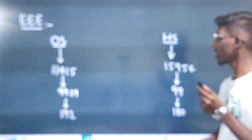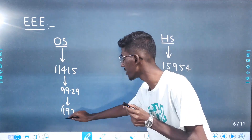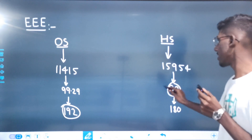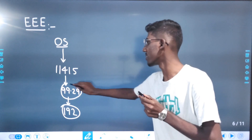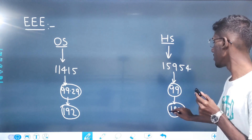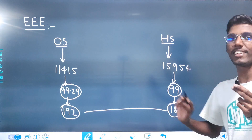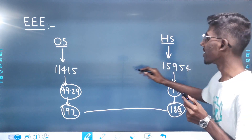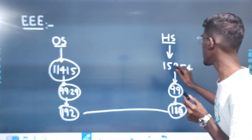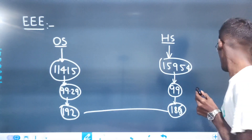Next is EEE — 192 marks at 99.29 percentile. There is a high mark here, around 185. The range touches 99.99 percentile. For homestate it is 1k rank, and for other state it is 15k rank. The difference in EEE is significant.